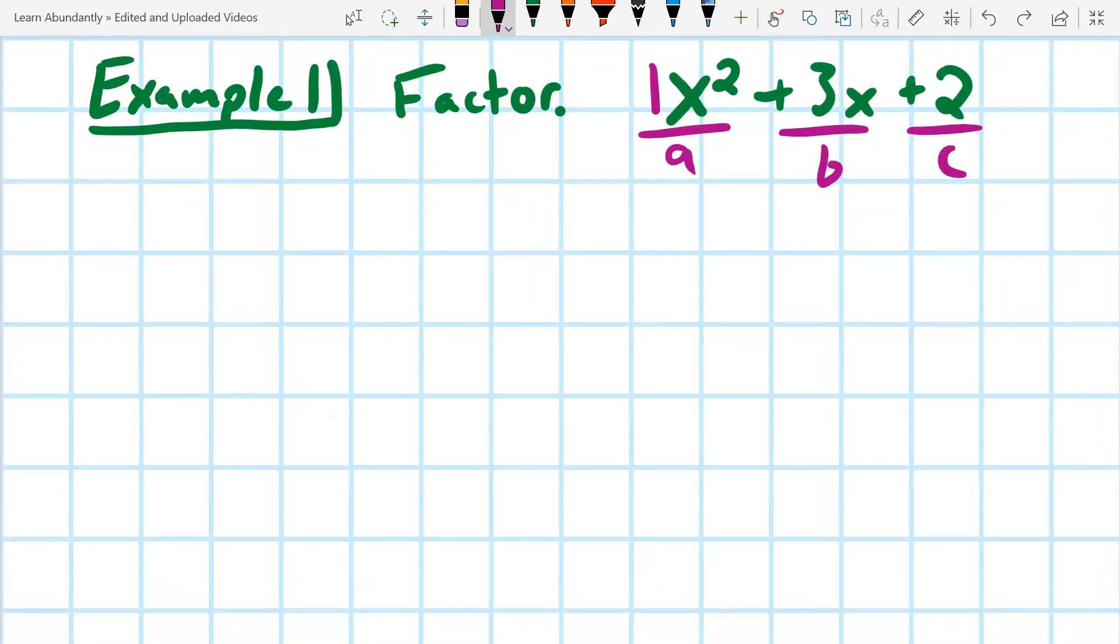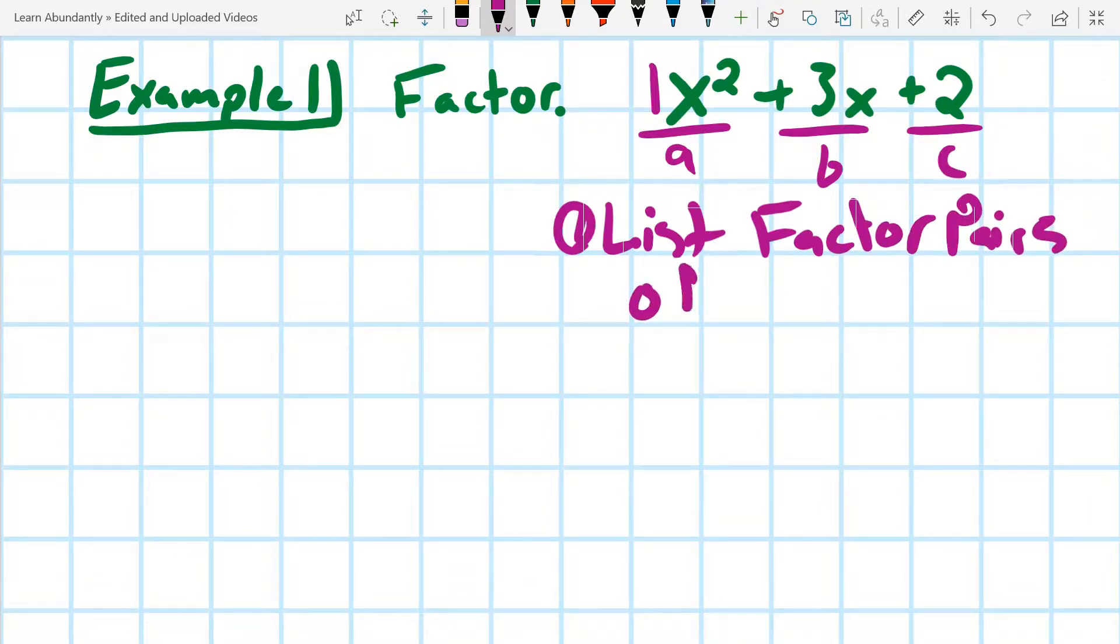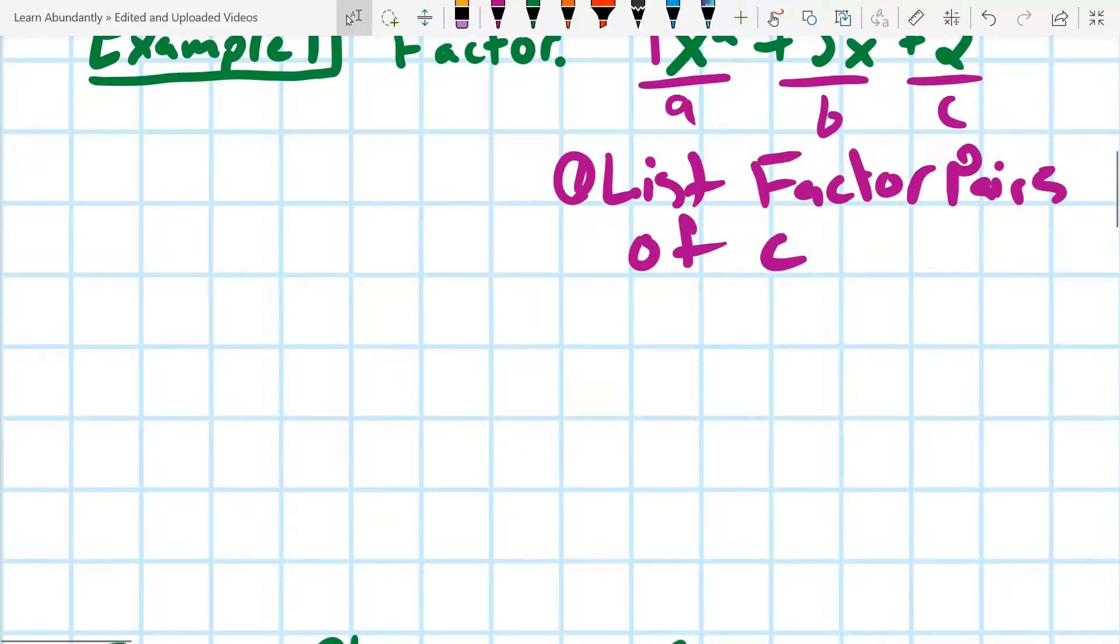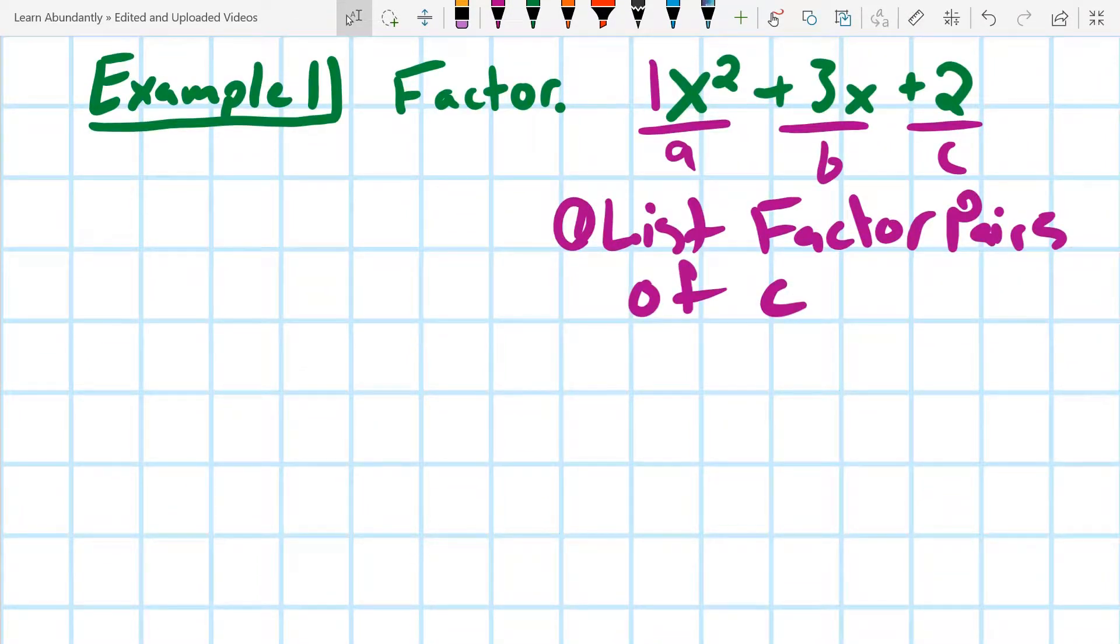We're going to take a look at the c term, the third term, and we're going to, one, list factor pairs of c. So since 2 is prime, all of the factor pairs of c are 1 and 2. 1 times 2 equals 2. So a factor pair is just a pair of numbers that multiplies to give me the number that I'm factoring.